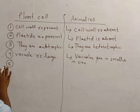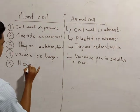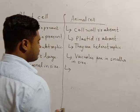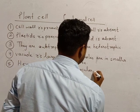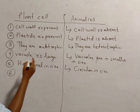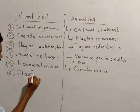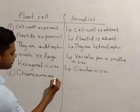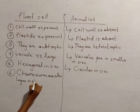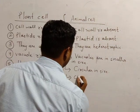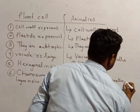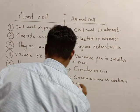Number 5 point: plant cells are hexagonal in size or shape. Animal cells are saccular in size. Since plant cells have larger vacuoles and larger size, therefore chromosomes in plant cells are also larger in size. In animal cells, chromosomes are smaller in size.